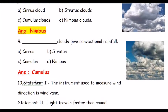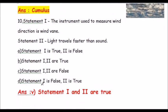Question number 9: Which clouds give convectional rainfall? The cumulus clouds give convectional rainfall. It is cumulus cloud. Cumulus clouds give convectional rainfall.